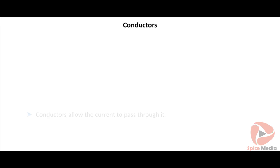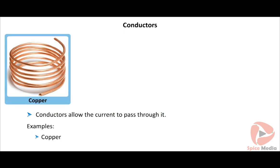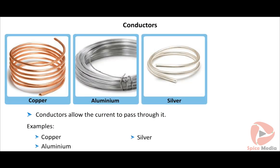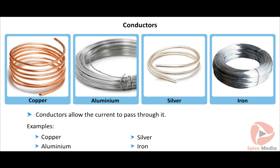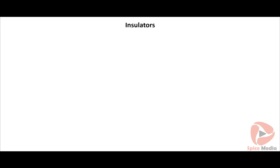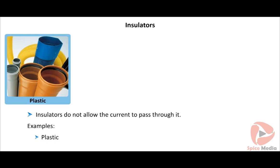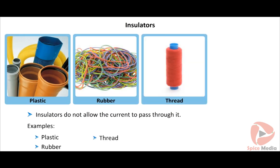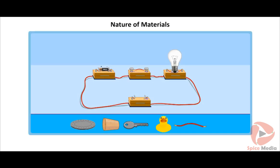Conductors are materials which allow current to pass through them. All metals conduct electricity — for example, copper, aluminium, silver, and iron are good conductors of electric current. Insulators are materials which do not allow current to pass through them. Examples are plastic, rubber, thread, and wood. Observe the animation and identify the conductors and insulators.